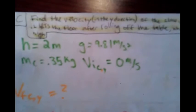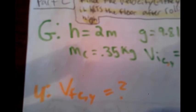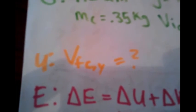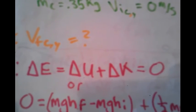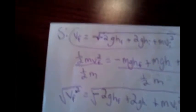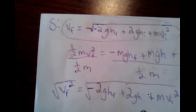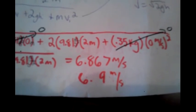Part C: Find the velocity in the y-direction of the claw just before it hits the floor after rolling off the table, which is 2 meters high. What we need is the final velocity of the claw in the y-direction. We will use the equation: change in energy equals change in potential energy plus change in kinetic energy, which equals zero because we are using conservative forces and neglecting air resistance. After the math, we get: final velocity equals the square root of 2gh initial. Plugging in, we get 6.867 meters per second, or 6.9 meters per second for significant figures.